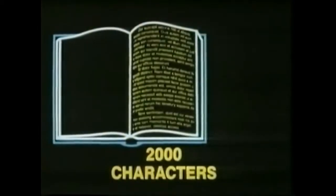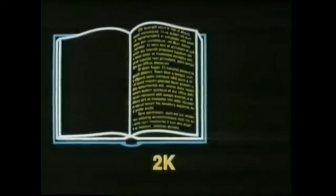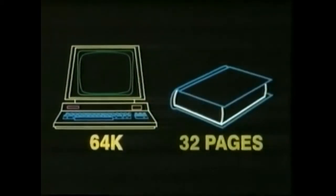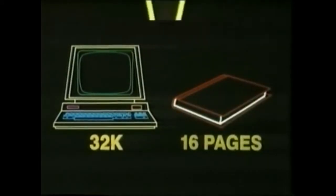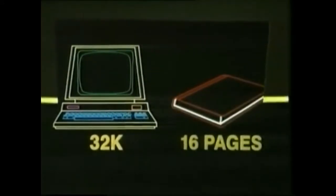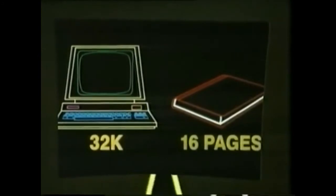This may sound a lot, but it isn't. The average page of a book contains about 2,000 characters — it's a 2K page. So even a 64K computer can only store as many characters as a 32-page book, and a 32K computer only as many as a 16-page book. Although, of course, a computer can do a lot more with its characters than a book can. But that's another story.